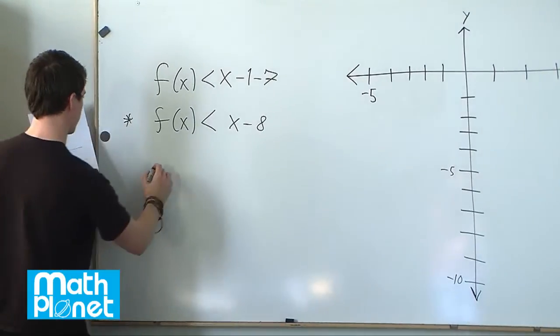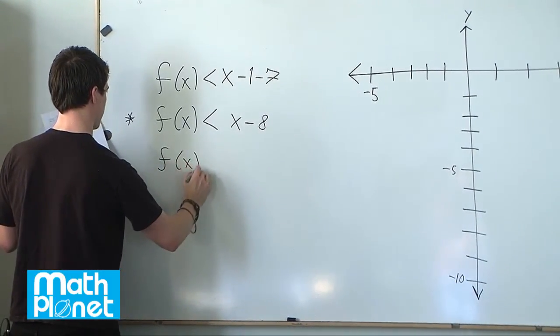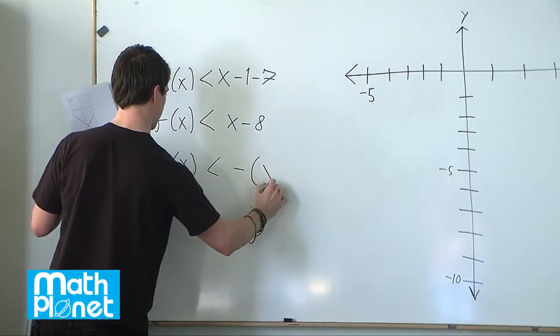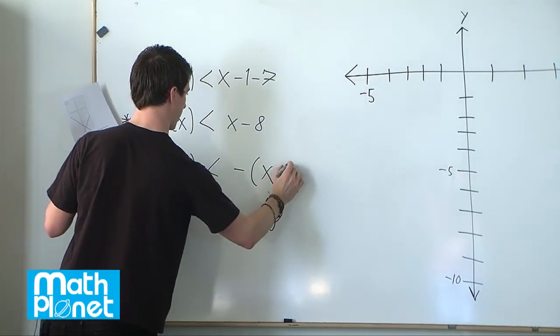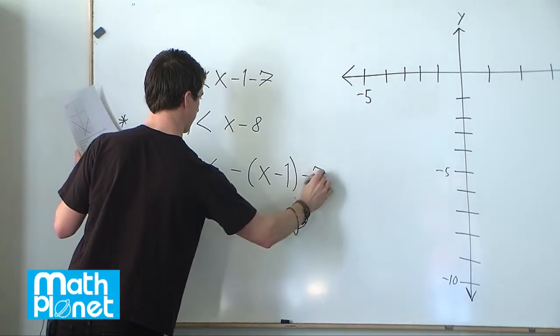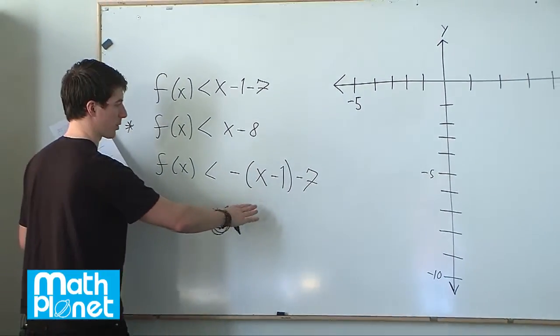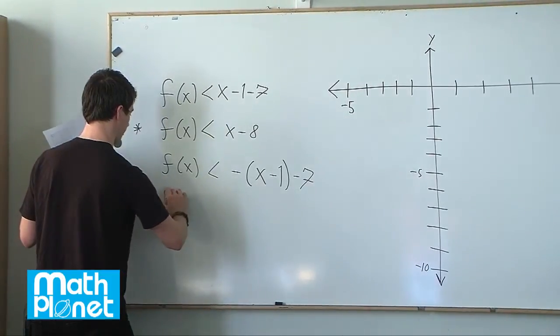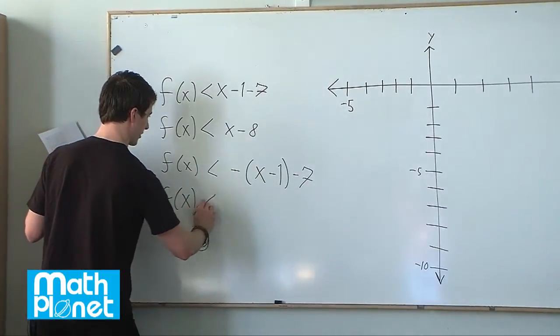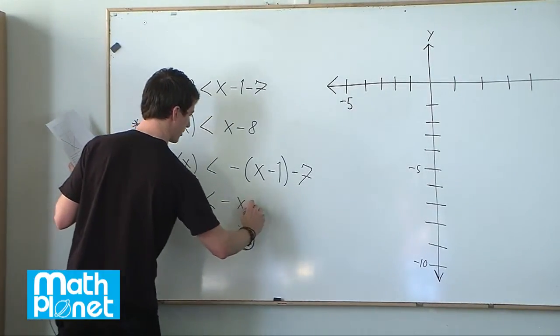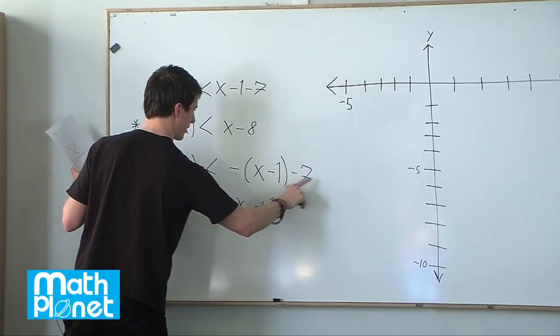Now the other function is f(x) is less than negative quantity x minus 1 all minus 7. So we need to just expand this negative through this x minus 1 and then simplify. So that gives us f(x) is less than negative x plus 1 and then minus 7.